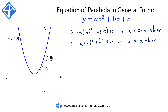To get the last equation, we use the point 0, 5, and substitute that in as well, so we get 5 is equal to a times 0 squared plus b times 0 plus c, and this simply becomes 5 is equal to c.